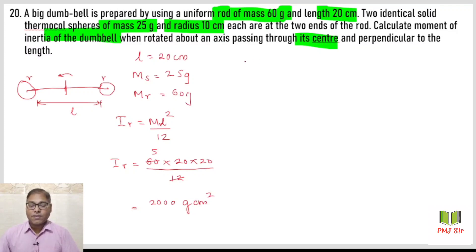Now we need the sphere's moment of inertia. Sphere's moment of inertia is 2 by 5 MR square. So 2 upon 5 times sphere mass 25 times radius 10 times 10. Calculating: 5 and 25 gives 5, then 10 into 10 into 10, which is 1000 gram centimeter square for the sphere.